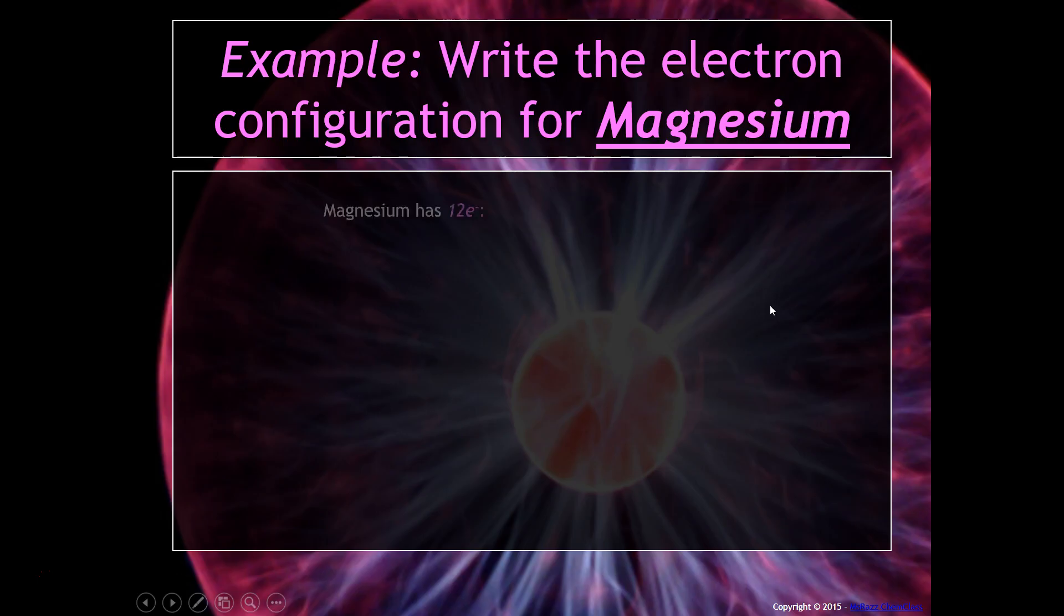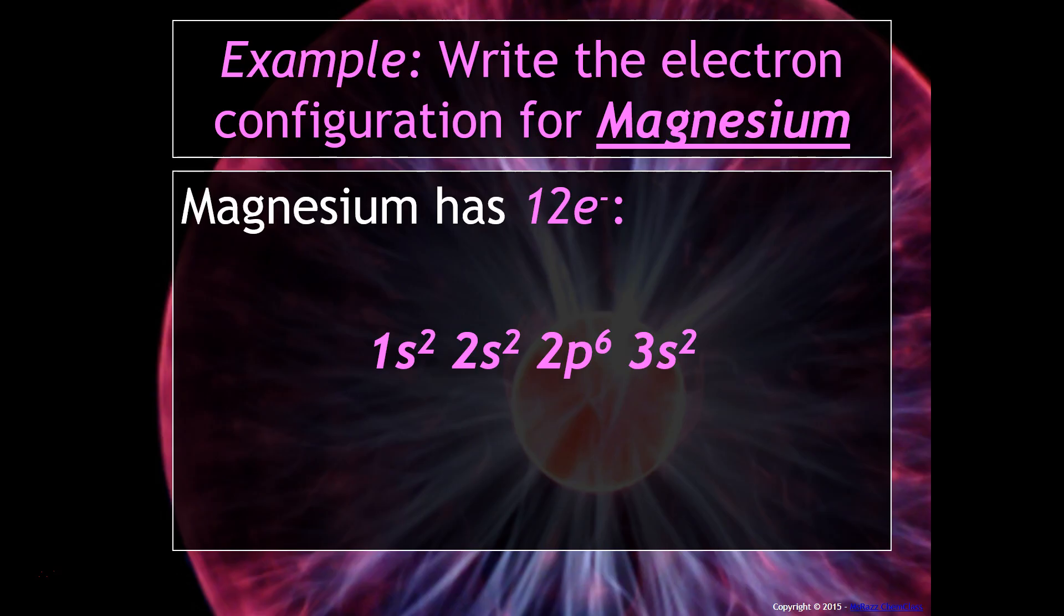Let's try it for magnesium. Magnesium has 12 electrons. And so his configuration would look something like this. So notice it's 1s², 2s², 2p⁶.